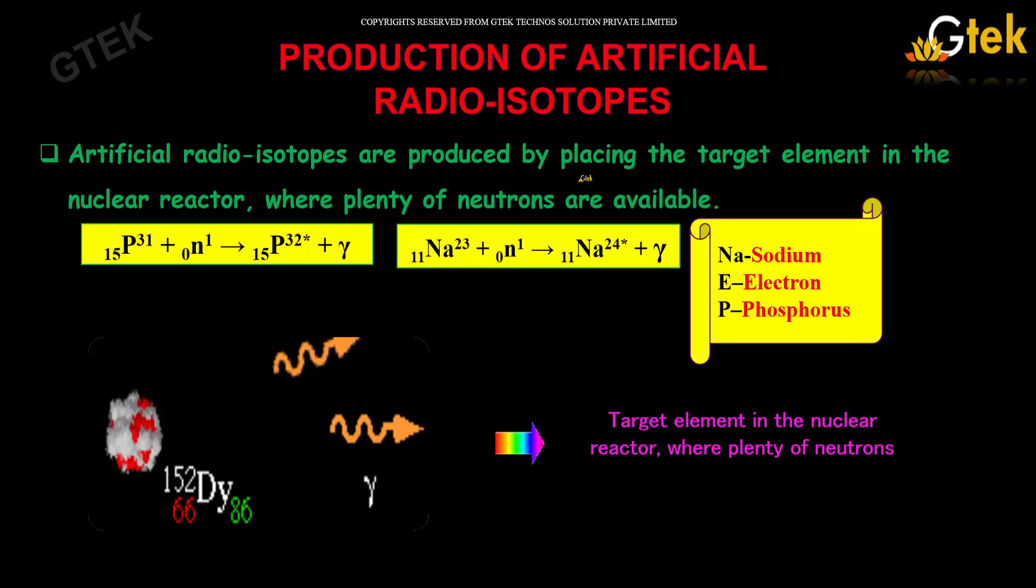The artificial radioisotopes are produced by placing the target element in the nuclear reactor, where plenty of neutrons are available.